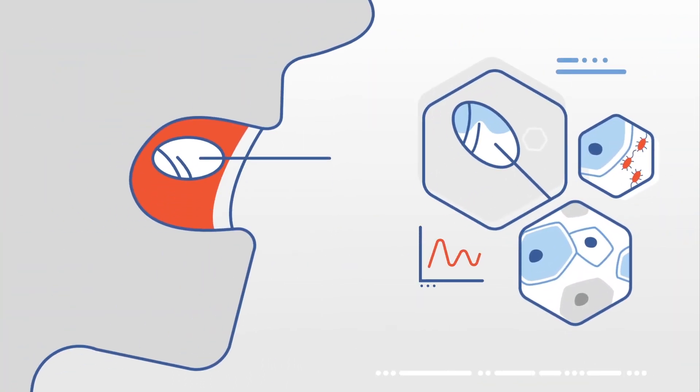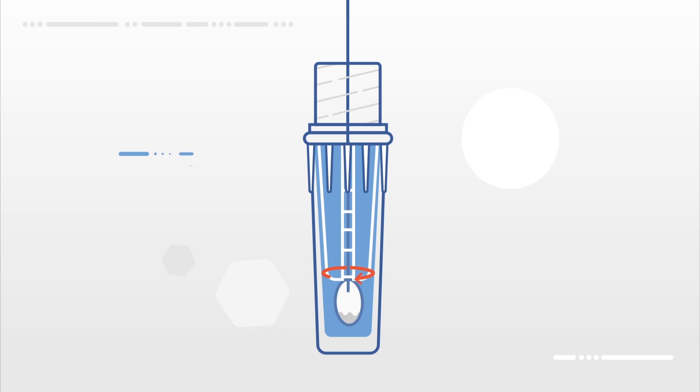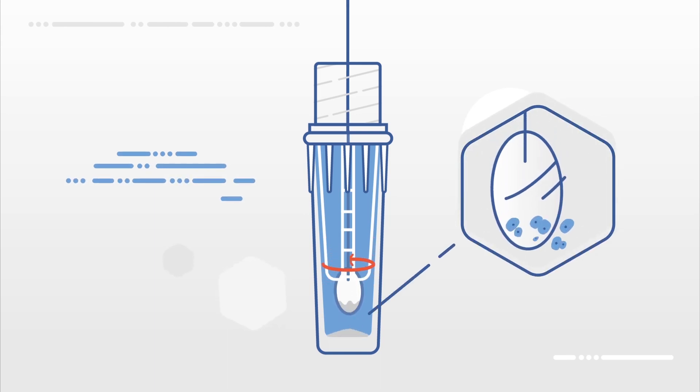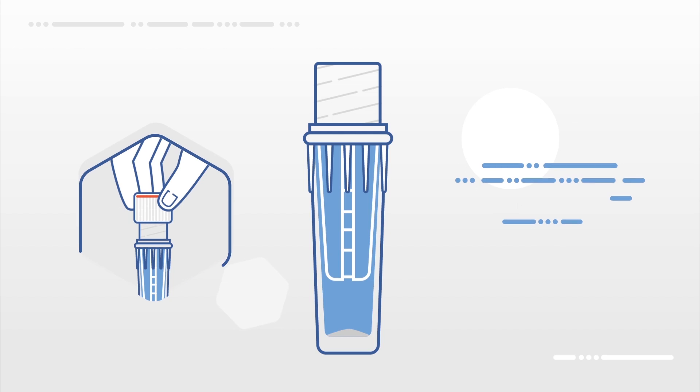Simply swab the inside of the cheek and twist the swab into the tube. Agitate the swab to loosen the cells, and then discard the swab.